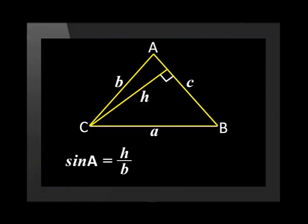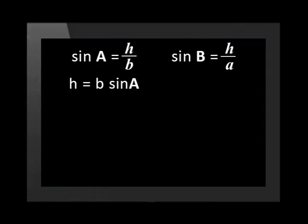Sine A is equal to H over b. Sine B is equal to H over a. Now let's make H the subject of both statements. H is equal to b sine A and H is equal to a sine B.